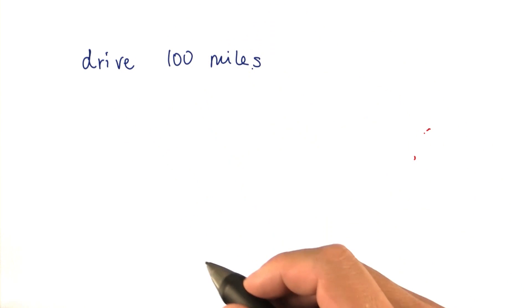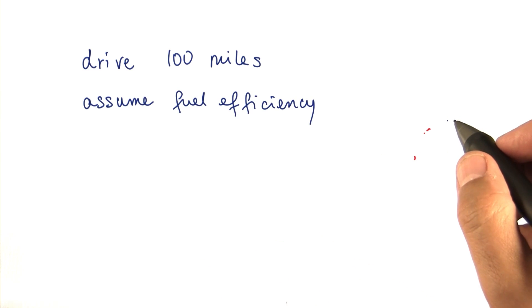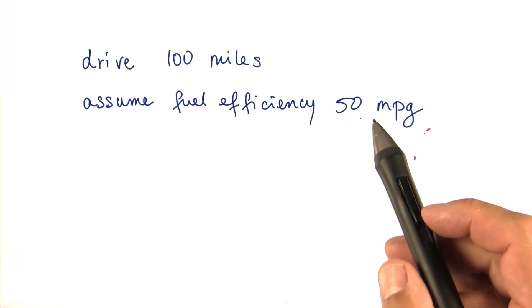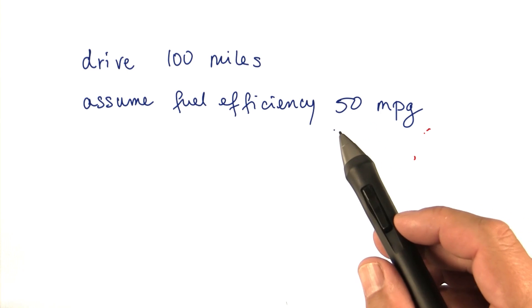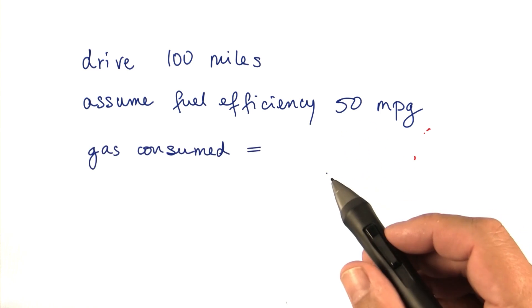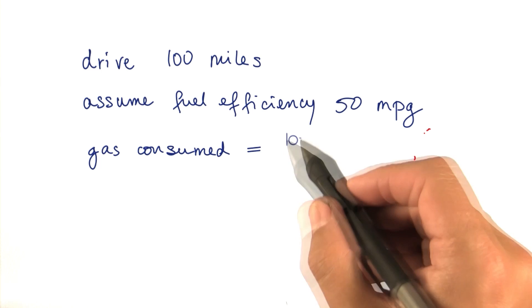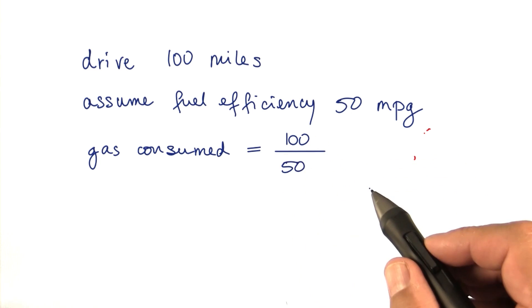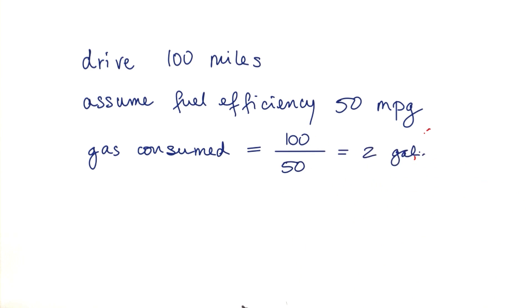So let's say we drive 100 miles. How much gas does that take? Well, of course, that depends on the fuel efficiency. Let's assume that we have a car with great mileage, 50 miles per gallon. Well, then the gas consumed is 100 miles divided by the fuel efficiency, or two gallons.